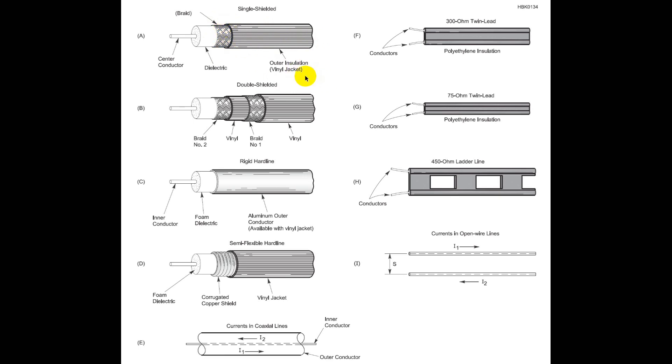So what you're looking for is something with 100% coverage on the braid. So that almost instantly rules out RG58. Now RG8X is a form of this cable that works very well. Also RG8U.